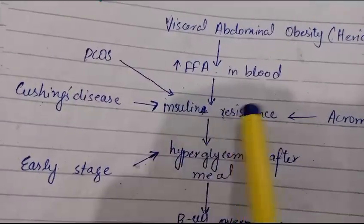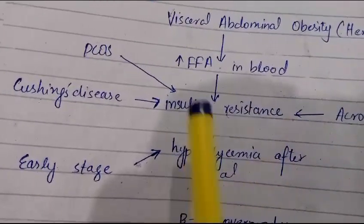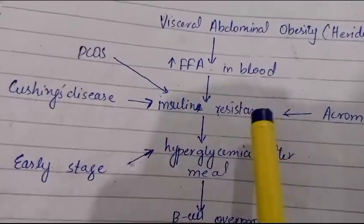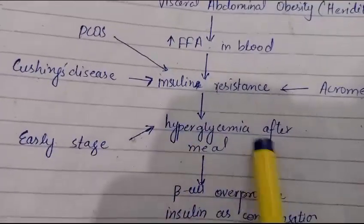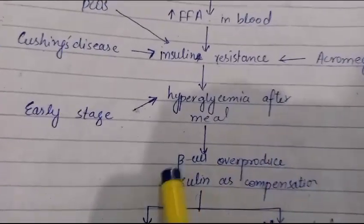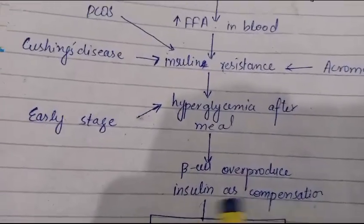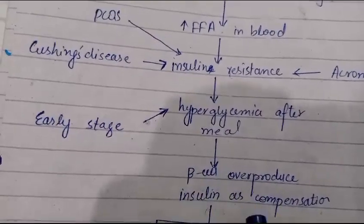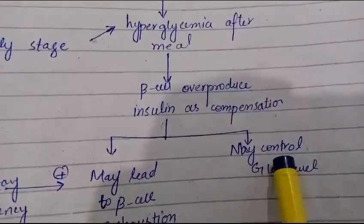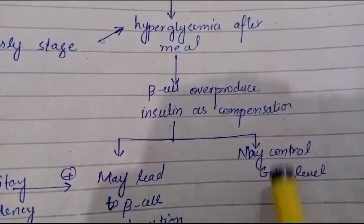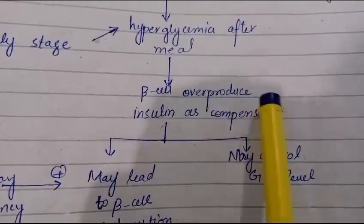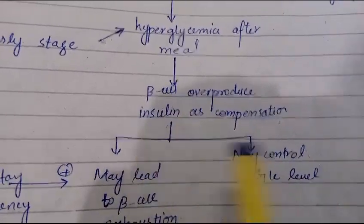To compensate, insulin levels increase. But since the body has not responded due to insulin resistance, glucose levels after eating will not be controlled — postprandial hyperglycemia persists. The body compensates by producing more and more insulin. We may be able to control glucose levels somewhat, but the beta cells become overworked and overproduce insulin.